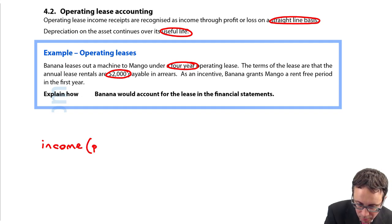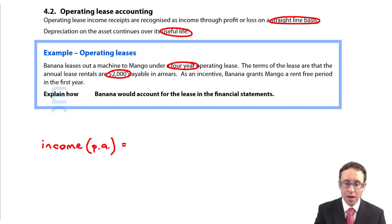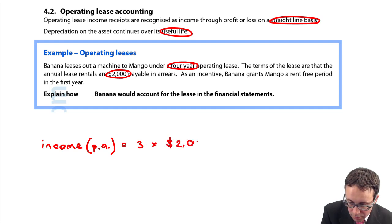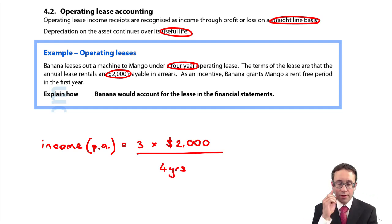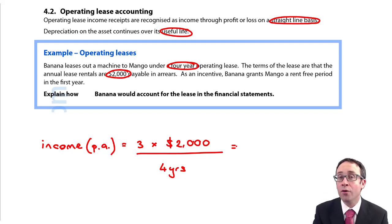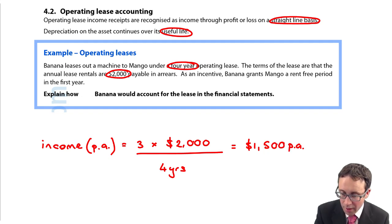So what you've got there is you need to go through and look at the rental income per annum. Just be careful, there are three payments and then we spread that over the four years. If that's the case you may be familiar with these numbers from earlier examples, and what you might see is it's just the reverse accounting treatment from when we had a low value or a short lease asset, when we're looking at it from the lessor's perspective. So three times two is six divided by four is 1.5, so $1,500 per annum.